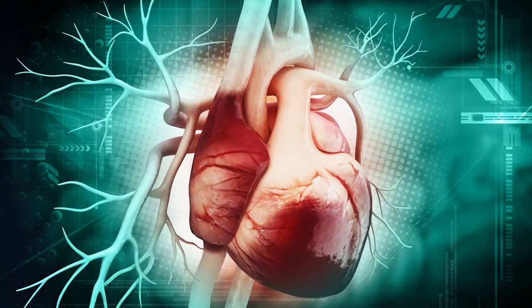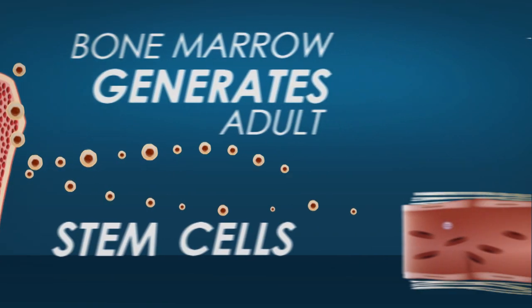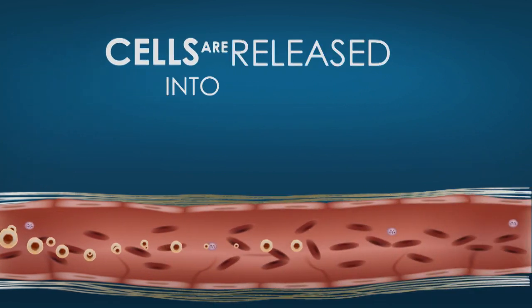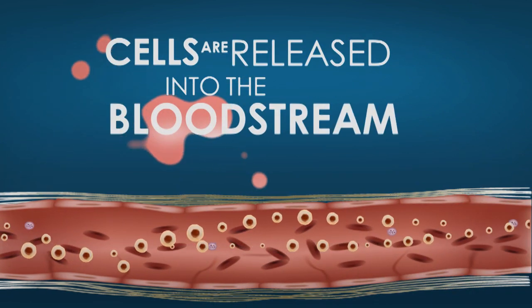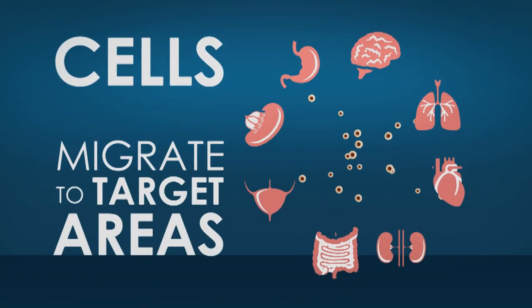How do our bodies produce these cells? Bone marrow generates adult stem cells and then releases them into the bloodstream. These cells then migrate to target areas and differentiate into cells with specific features.